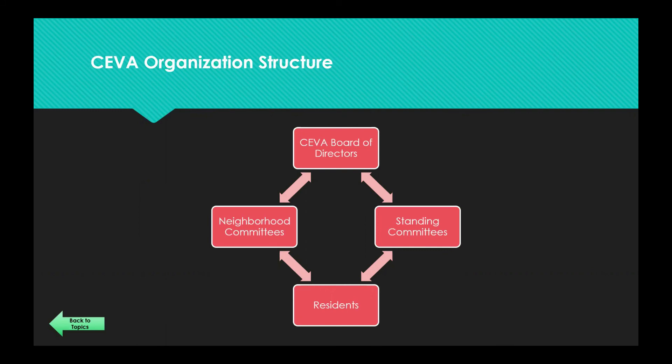What you're looking at is the SEVA organization structure. It was set up this way to develop a link between the SEVA Board of Directors and the residents. By breaking off into smaller neighborhood committees and standing committees, residents then have better representation with the board, are better heard, and have better communication. This slide shows the links between them all.